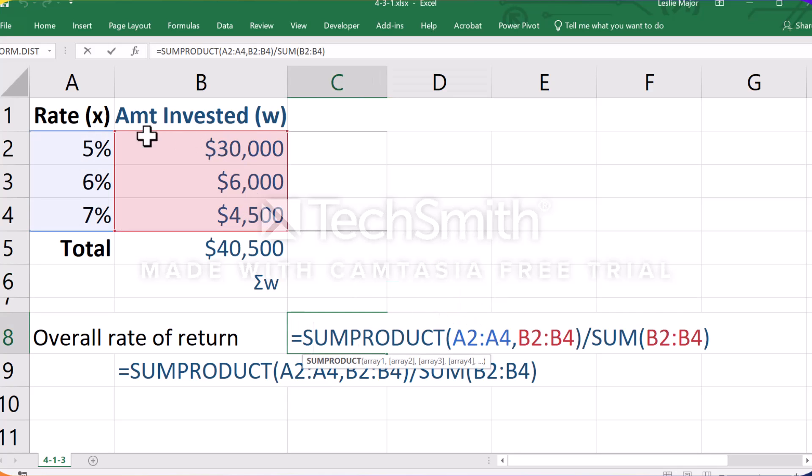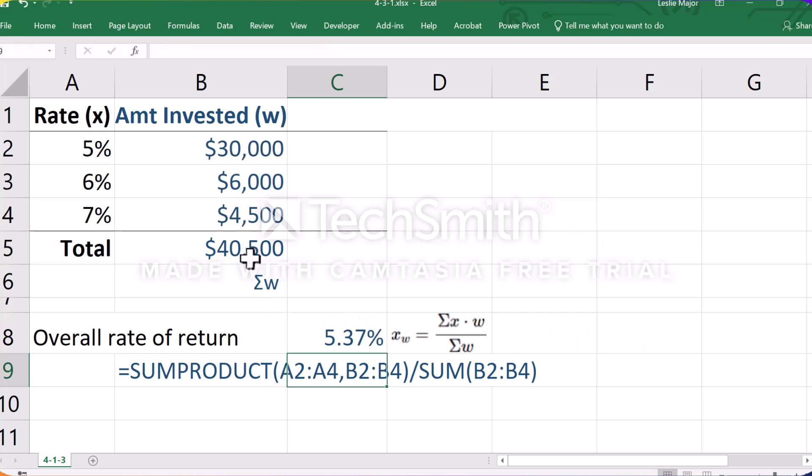This is a SUMPRODUCT of the rates with the amounts invested. That's like your x's times your w's. And then you divide by the sum of the weights.